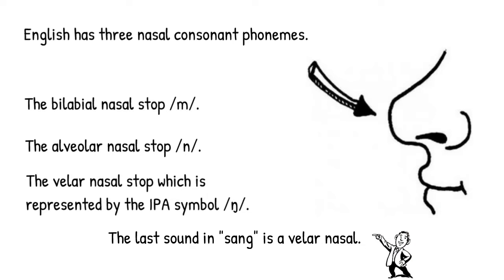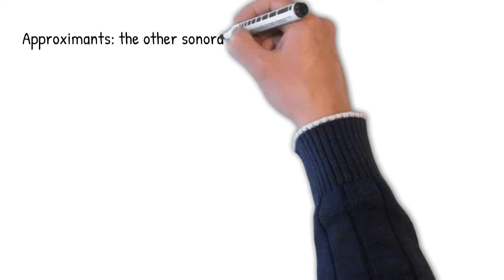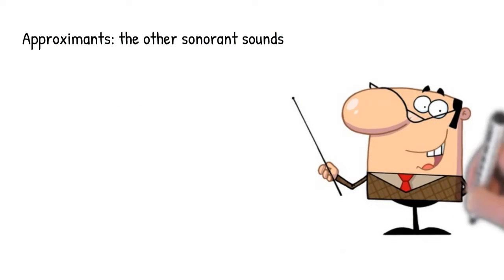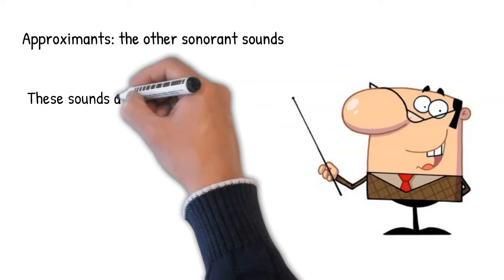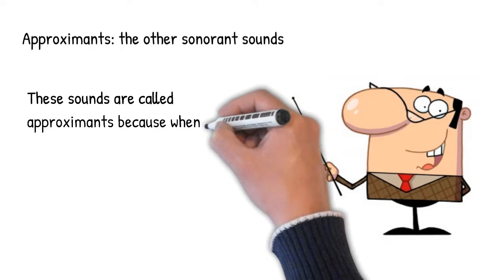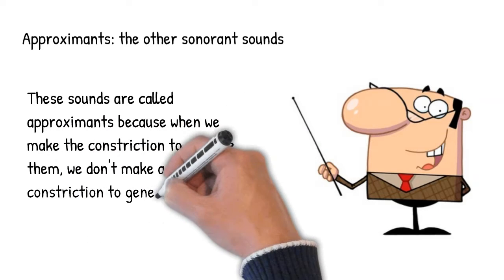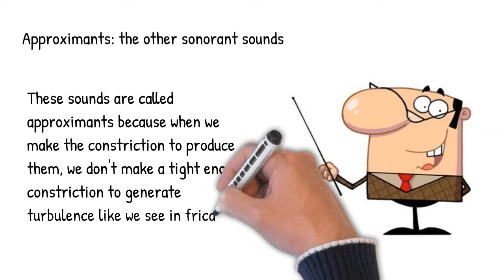Let's turn now to a class of sounds that linguists refer to as approximants. Approximants get their name from the approximation of two articulators that form a constriction that isn't quite close enough to generate turbulence of the kind that we find for fricatives. We'll discuss two classes of approximants here, the first of which are known as liquids.